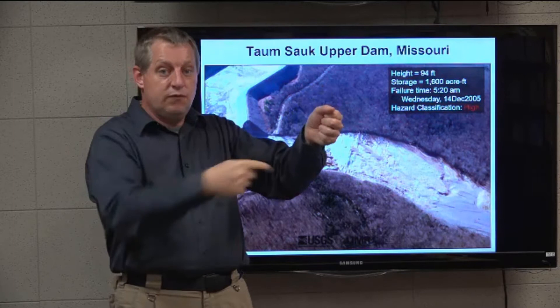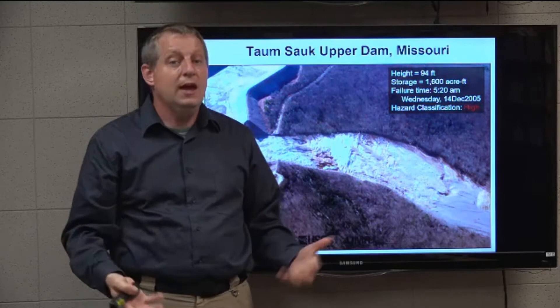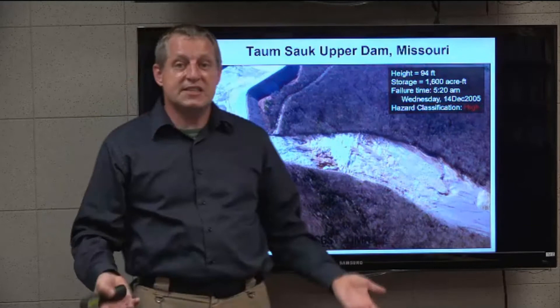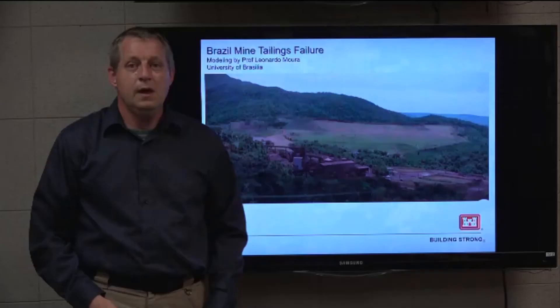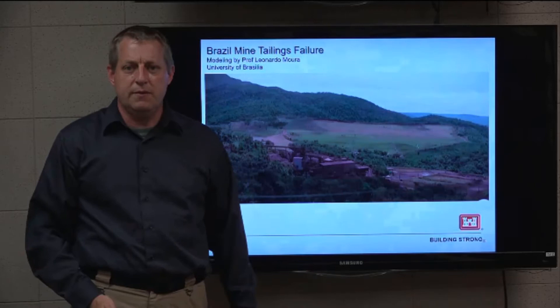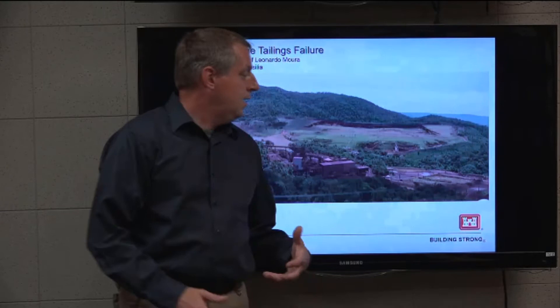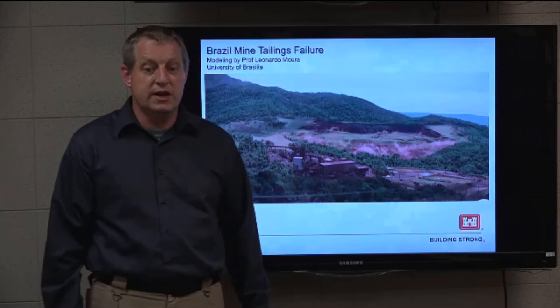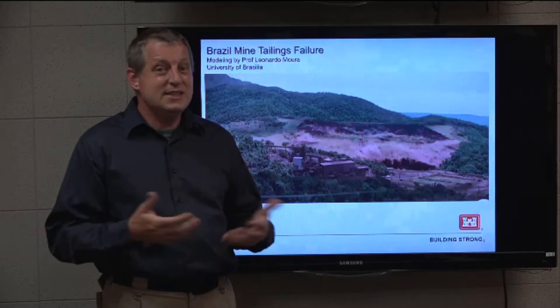There have been several recent notable dam breaches worth talking about. One of them is the Taum Sauk dam in Missouri. This is a ring dam on top of a mountain. The reason they did that is they wanted to smooth out the hydroelectric curve — pumping water into this elevated ring dam during low hydro power hours and then using that water to generate peak power.